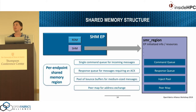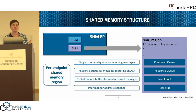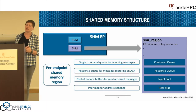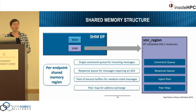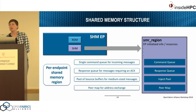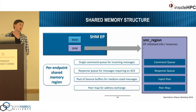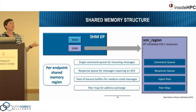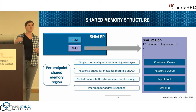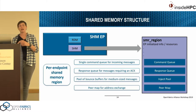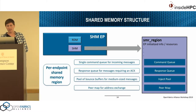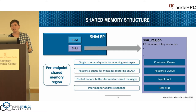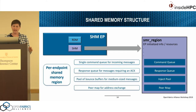A quick overview of the shared memory structure. We have the shared memory structure used for communication, with various endpoint-initialized resources such as process ID (needed for the CMA call), the endpoint name, locks, maps, and so on. We have a single command queue for incoming messages that peers can access, a response queue that the transmit side might use to allocate an ACK response, a pool of bounce buffers for medium-sized messages, and a peer map for address exchange.